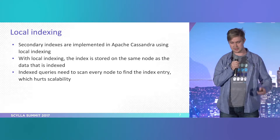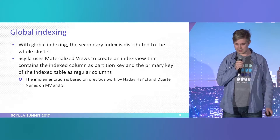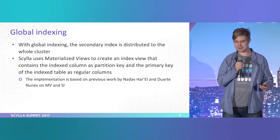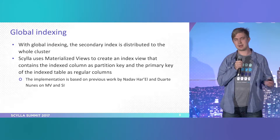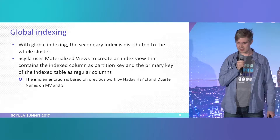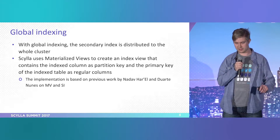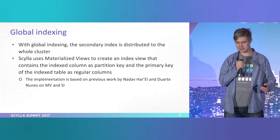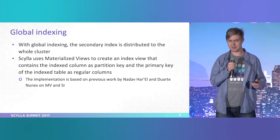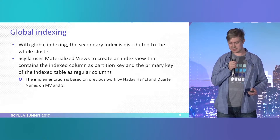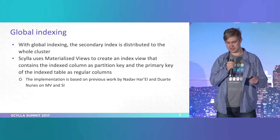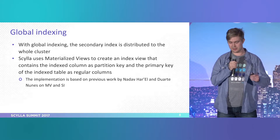For ScyllaDB, we're starting with global indexing, because a lot of people get it wrong how to use secondary indexes — they assume that the kind of query I'm using as an example would work efficiently. That's why we picked global indexing. Because we have a materialized view infrastructure, instead of using a hidden table, we create roughly the same thing as a materialized view. That means the index gets distributed around the cluster, and the indexed column becomes the partition key, so we can quite efficiently figure out where the index is.